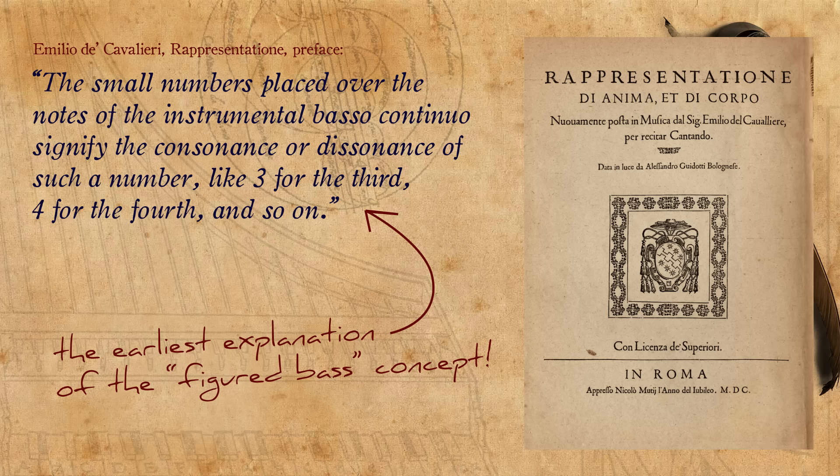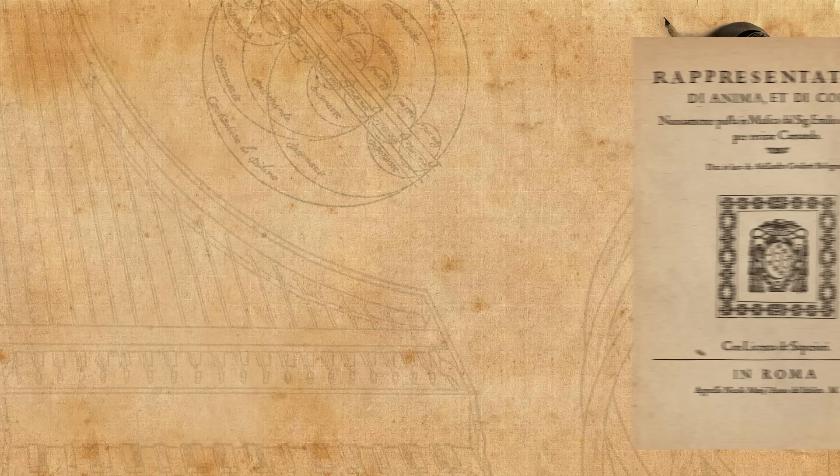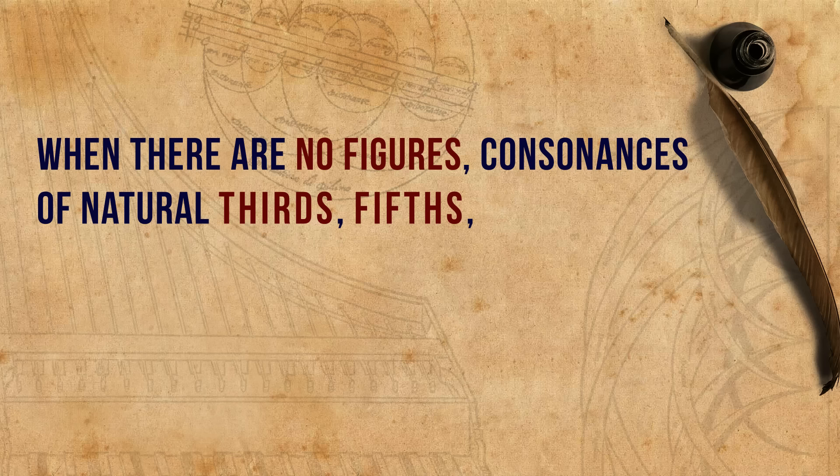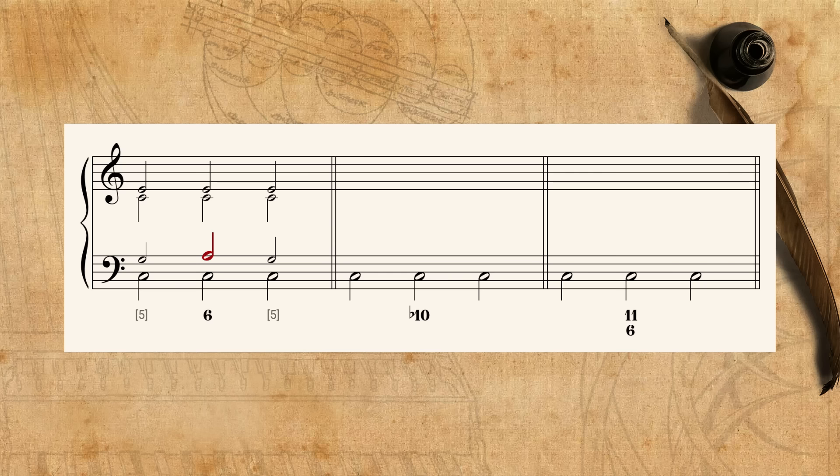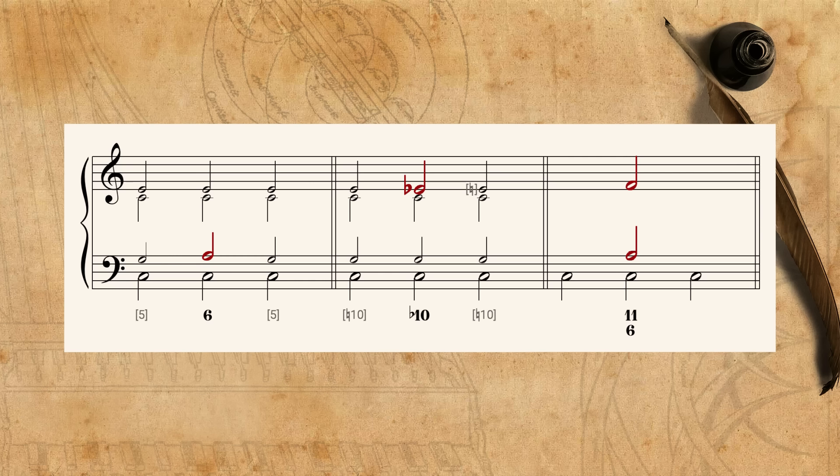Cavalieri, however, failed to explain some basic points, but these become clear when looking at the music. When there are no figures, consonances of natural thirds, fifths, and octaves should be played. Thus, the figures act like accidentals, that alter what should be there naturally. For example, a sixth alters a fifth, a flat tenth alters a natural tenth, a sixth and an eleventh alter a fifth and a tenth, and so on.